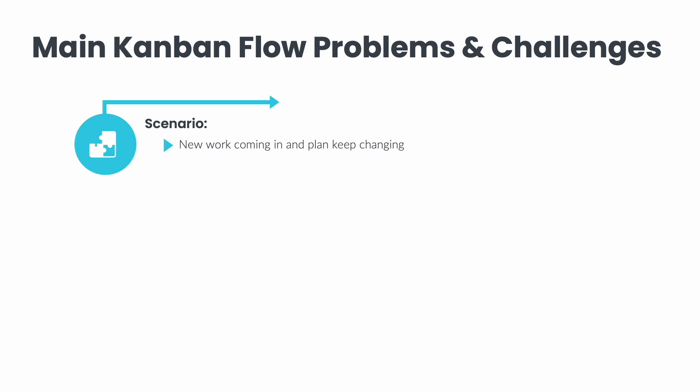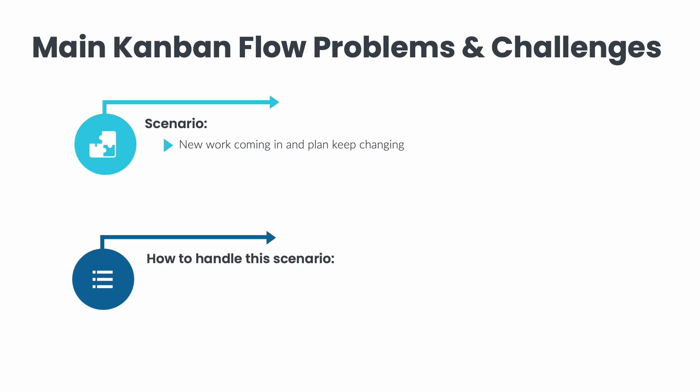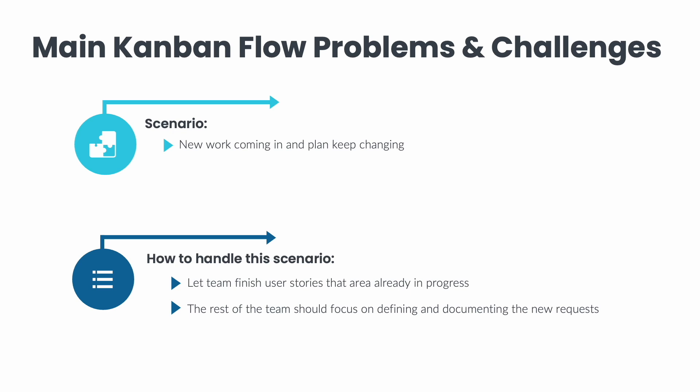This scenario happens from time to time and could come from executives or higher management. Teams using the Kanban method are in the best position to quickly change direction with minimum impact — Kanban excels in this area. If any user stories are already in progress, you might want to let the team finish those, double-checking with management as needed. While they do that, the rest of the team can focus on defining and documenting the new requests. The original work items in the ready column should be reviewed with stakeholders and the product lead to see if any should be kept or moved back to the backlog.